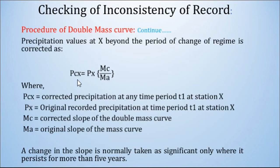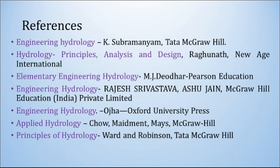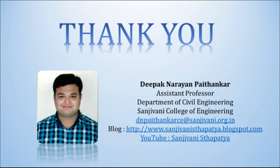By this factor MC/MA you can correct the values of station X where inconsistency is found, using the formula. If you need to check inconsistency for any particular year or month, take the rainfall value for that period and multiply by this correction factor to get the corrected value. This corrected value should be adopted for any further calculation. I hope you have understood the double mass curve technique and how to find and correct inconsistency. We will see everything in detail with a numerical example. Please refer to the standard reference books, and for any doubts contact me at dnpaitankarce@sanjivani.org.in. Thanks for listening. Happy learning.